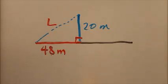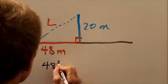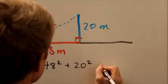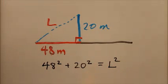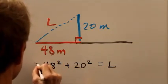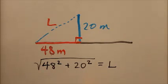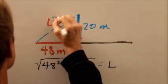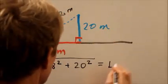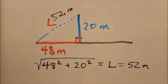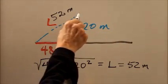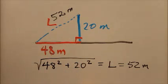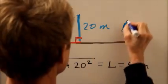48 squared plus 20 squared equals L squared — that is what the Pythagorean theorem will tell us. We take the square root of both sides and we get a solution for L. When you work that out with your calculator, you are going to come up with exactly 52 meters. So L equals 52 meters. That is the length of the Sun line, or the distance between the top of the pole and the tip of the shadow on the flat field. That corresponds to choice A.